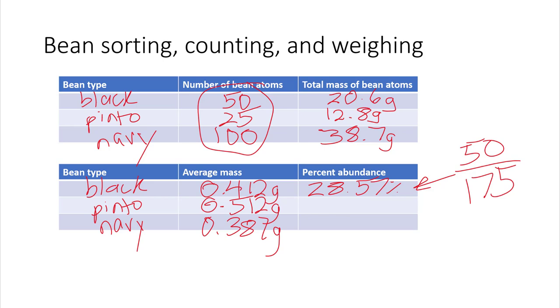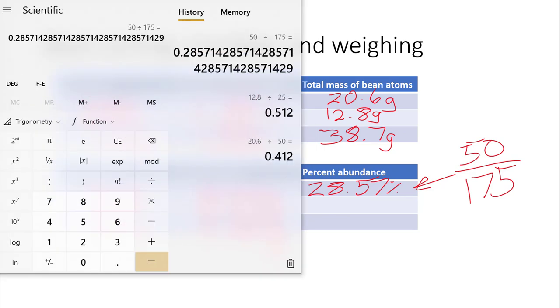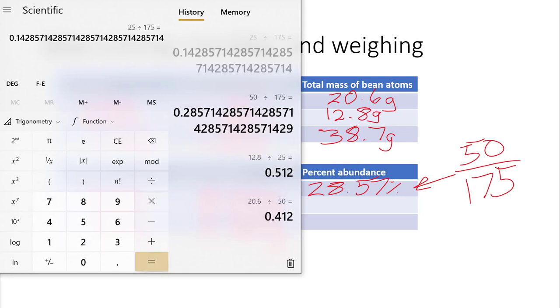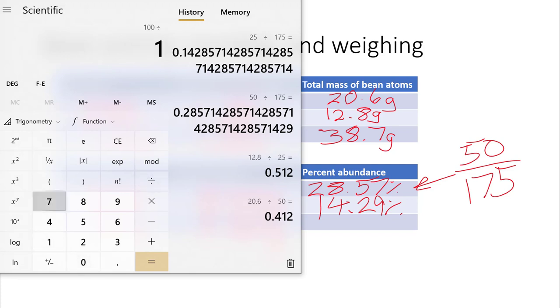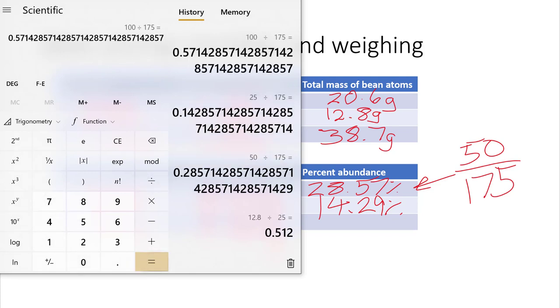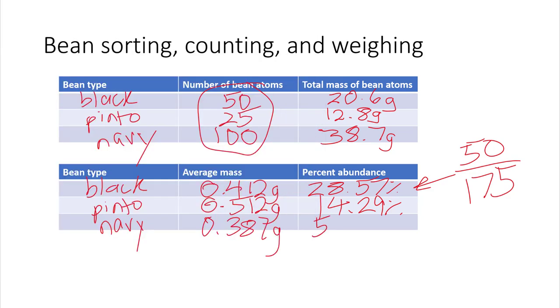And you do the same thing for the other ones. 25 divided by 175 for the pinto beans, so that would be 14.29%. And then for the last one, you do 100 divided by 175 for the navy beans, 57.14%. And if you add up all those numbers together, you'd get a number very close to 100%.